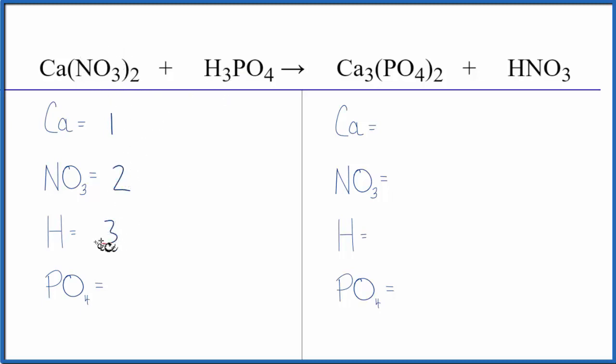three hydrogens, and then phosphate. I have a phosphate, the PO4 here, and there's the PO4, the phosphate ion again. So I'm just going to say I have one phosphate ion here. And you can see I've counted all these up really quickly and accurately.